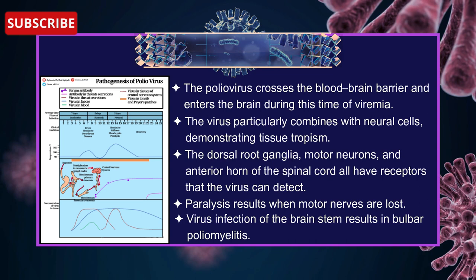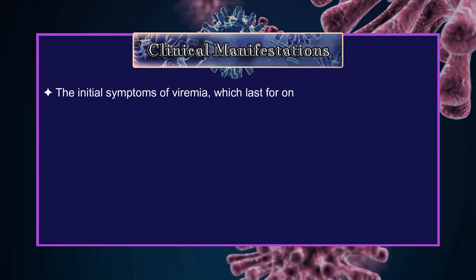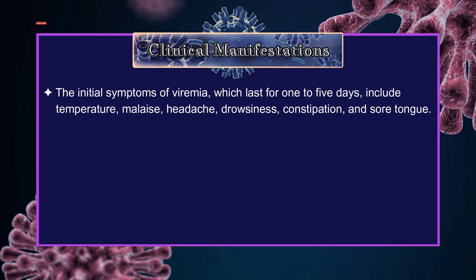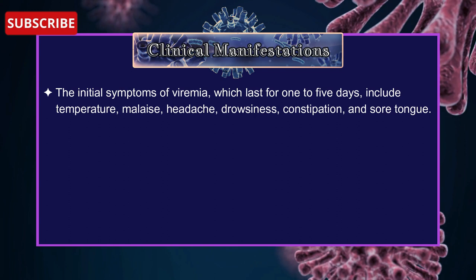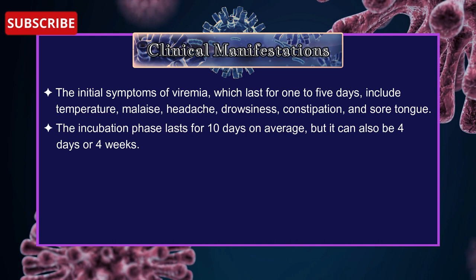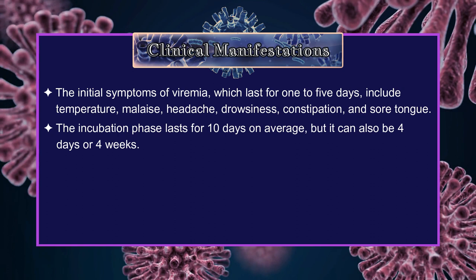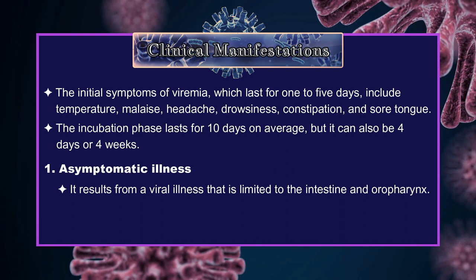Clinical manifestation of poliovirus. The initial symptoms of viremia, which last for 1-5 days, include fever, malaise, headache, drowsiness, constipation, and sore throat. The incubation phase lasts for 10 days on average, but can be as short as 4 days or as long as 4 weeks. 1. Asymptomatic illness: It results from a viral illness that is limited to the intestine and oropharynx.